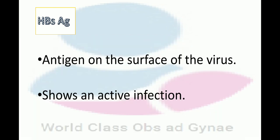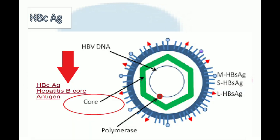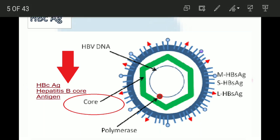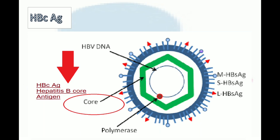Whenever HBs antigen is positive in the report, it means the patient is having active infection. Now, whether that is chronic infection, acute infection, whatever that is, we will understand that from the different parameters in the serology. But if HBs antigen is positive, it means the patient has got active infection.